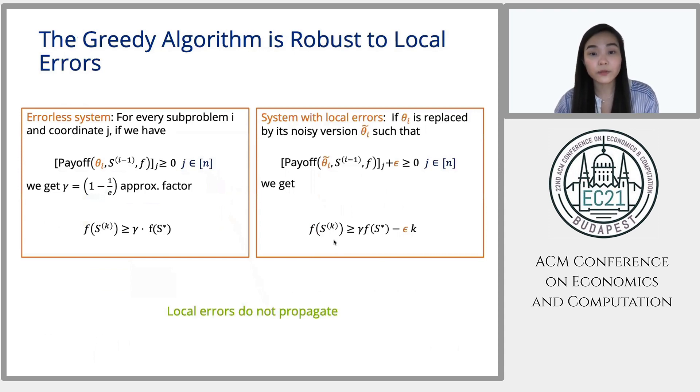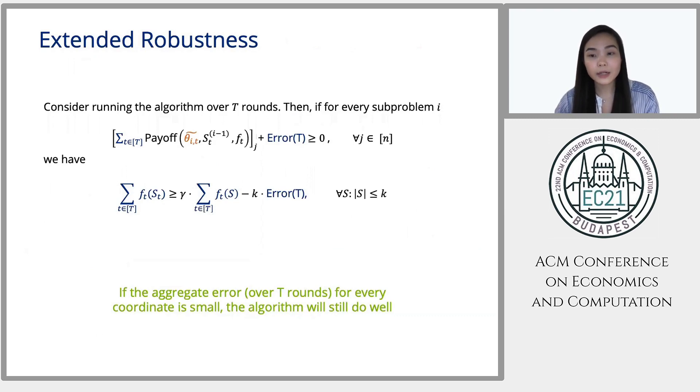Moreover, we actually need a stronger version of this robustness, which we call extended robust. Where the errors still do not propagate if we sum them over all rounds. So if we consider a noisy run of the algorithms over t rounds, and for each sub-problem, the sum of the payoff is at most error of t away from optimal, then the final sum of the rewards over t rounds would be at most k times error of t away from gamma optimal if the greedy algorithm is extended robust. So essentially, if the aggregate error for every coordinate is small, then the algorithm will still do well.